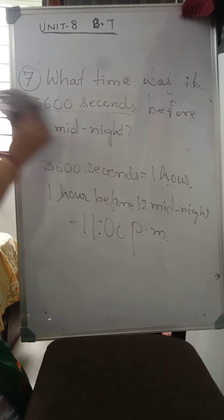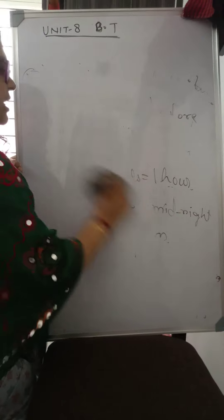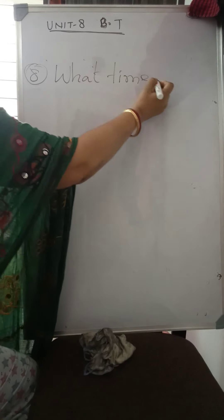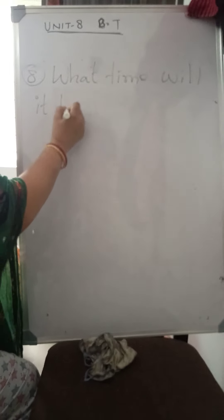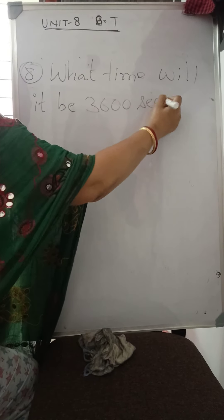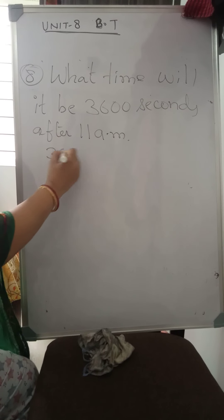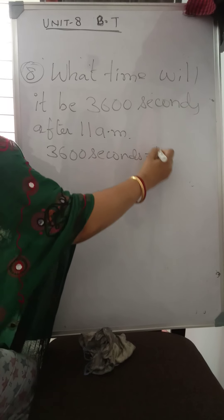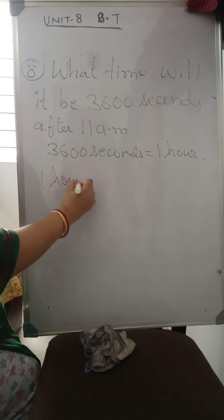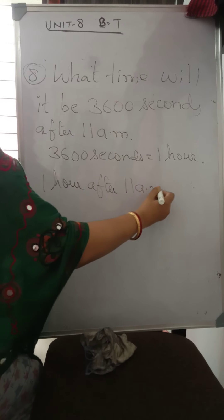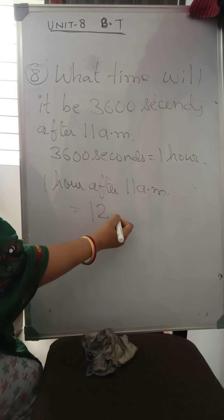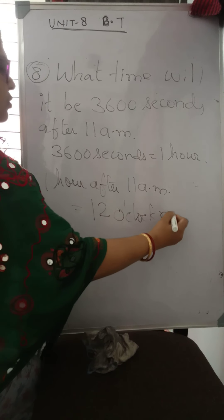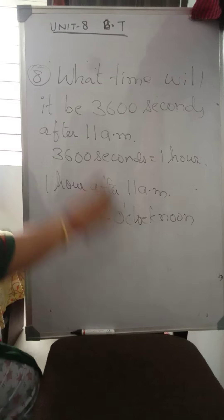Question No. 8: What time will it be 3600 seconds after 11 a.m.? Since 3600 seconds equals one hour, the question is one hour after 11 a.m. Eleven plus one is twelve o'clock noon — that is twelve p.m.